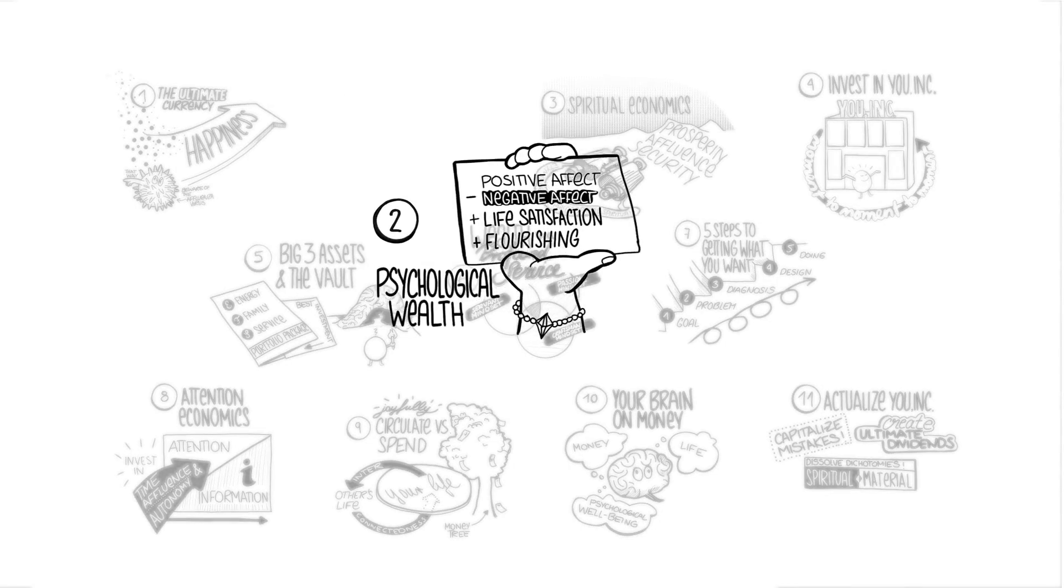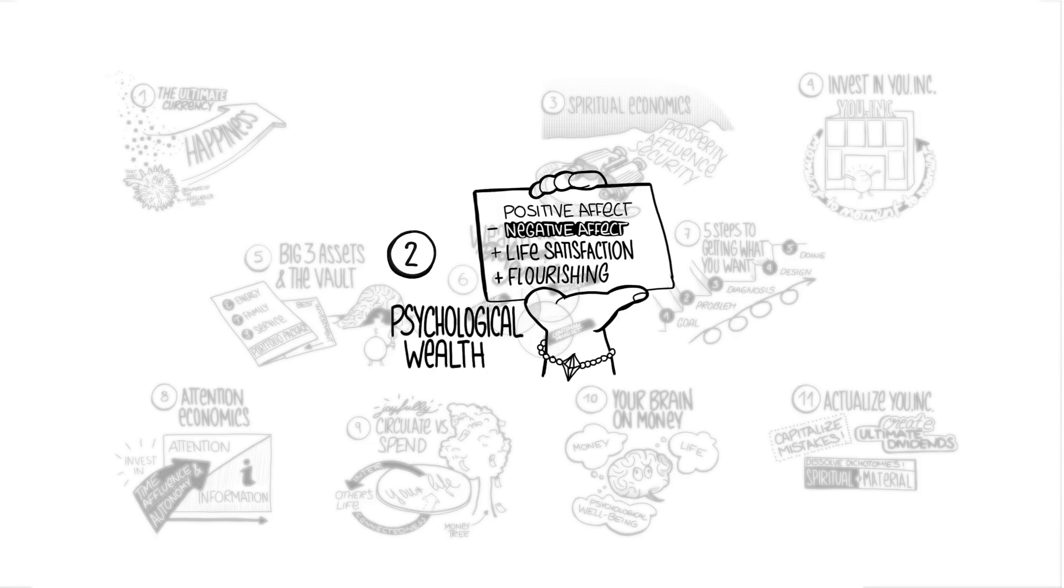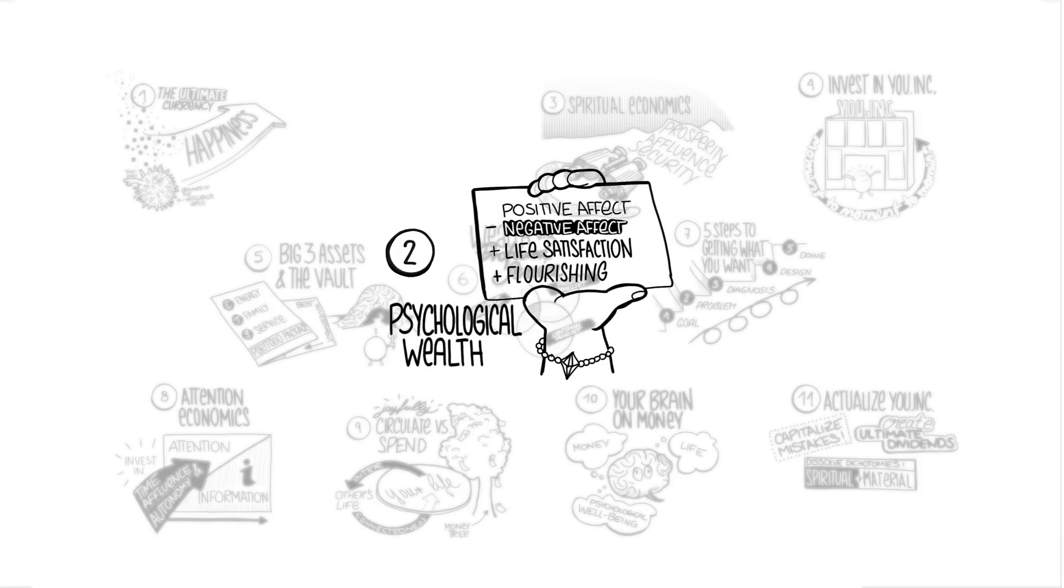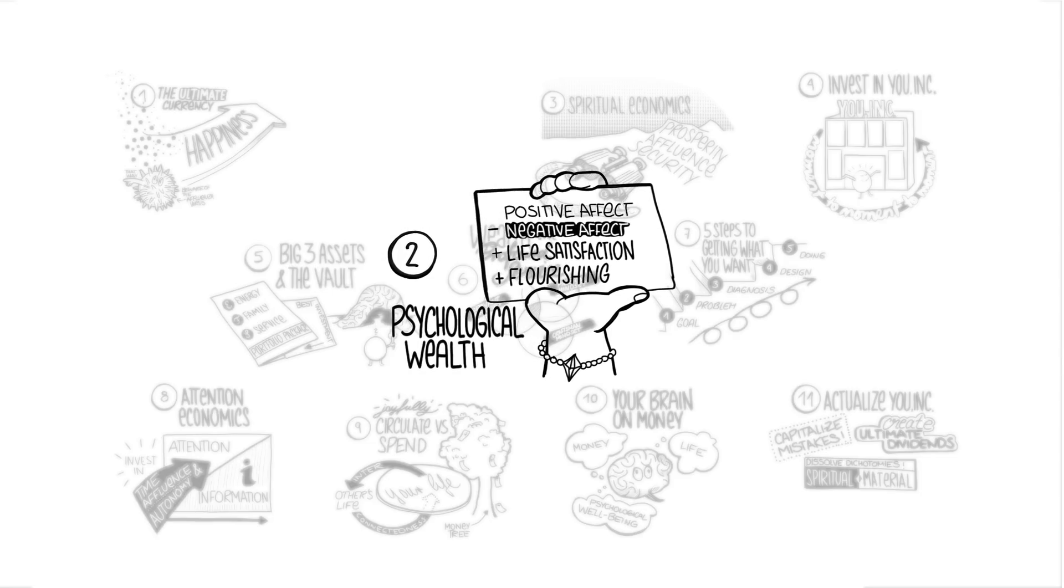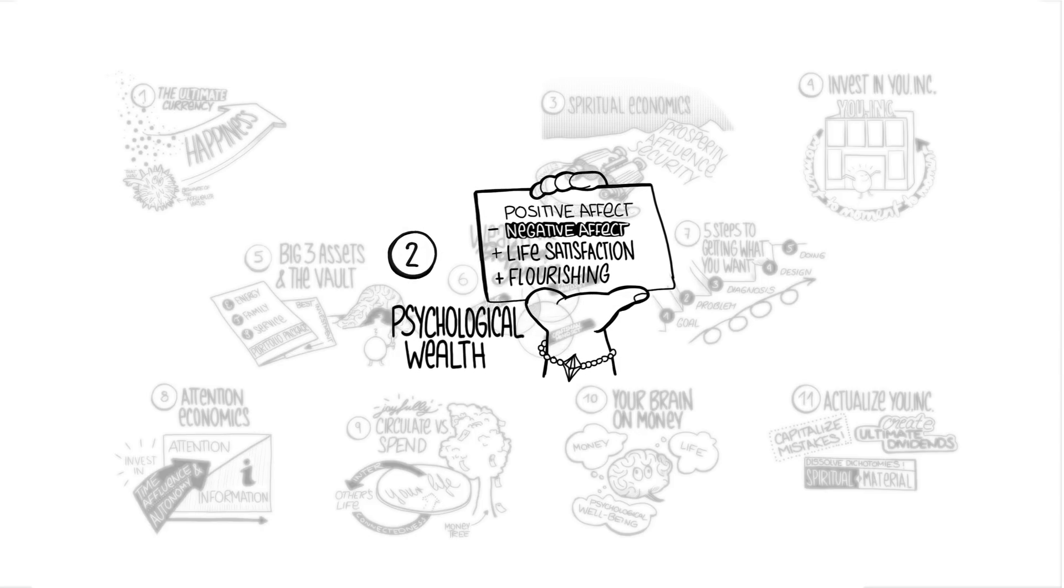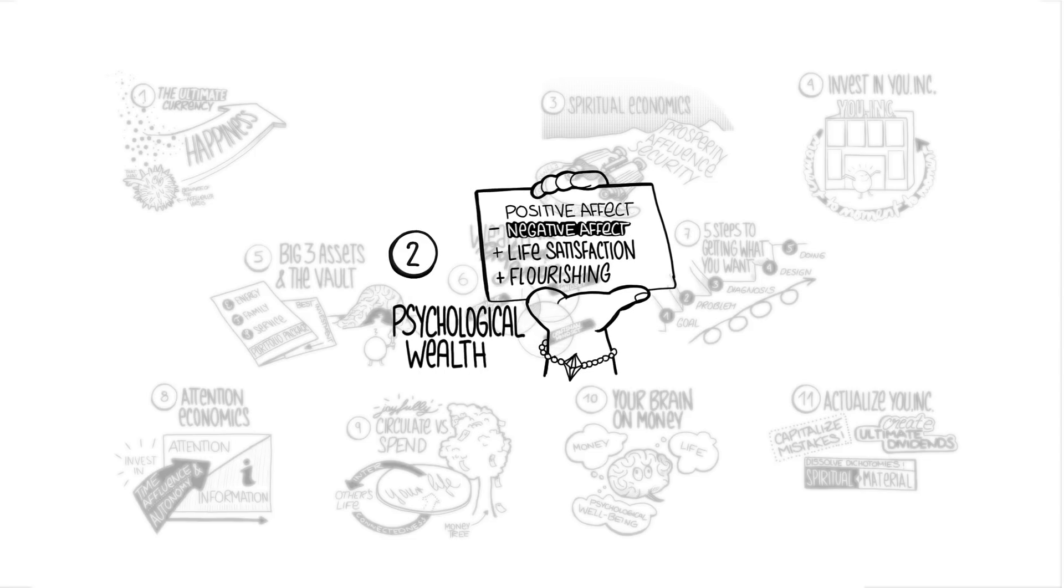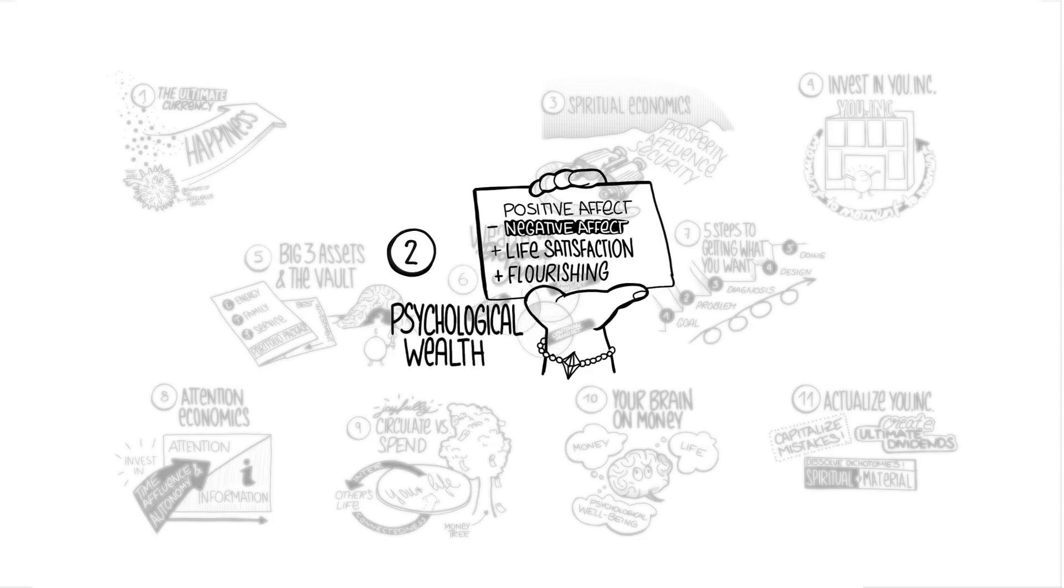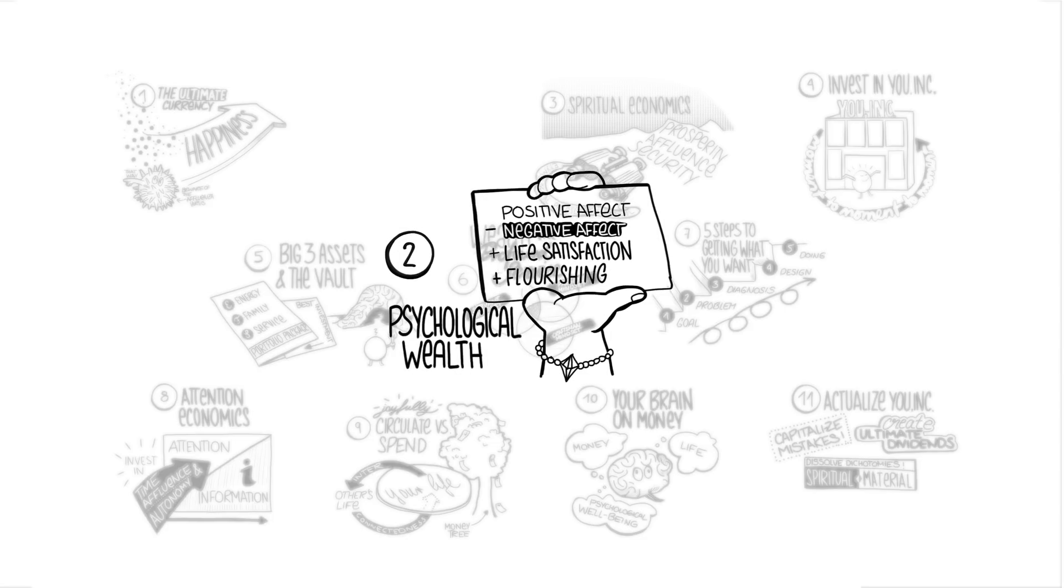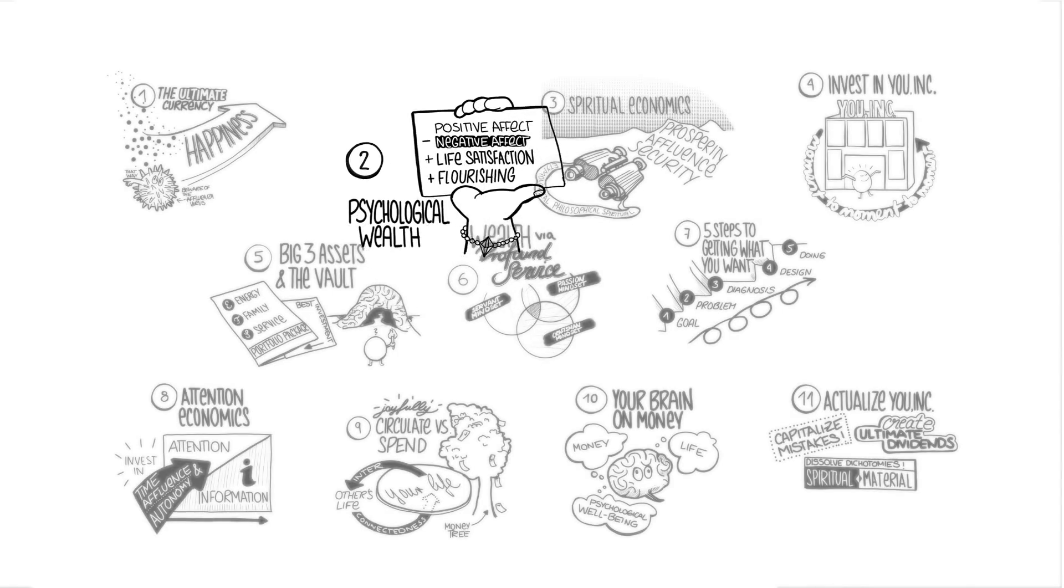Our second big idea is psychological wealth. Ed Diener is one of the world's leading positive psychologists, and he tells us there's a quick way to become a psychological billionaire. We're going to walk through the balance sheet of a psychological billionaire. It has four elements: positive affect minus negative affect plus life satisfaction plus flourishing. We're going to go into detail on each of those.